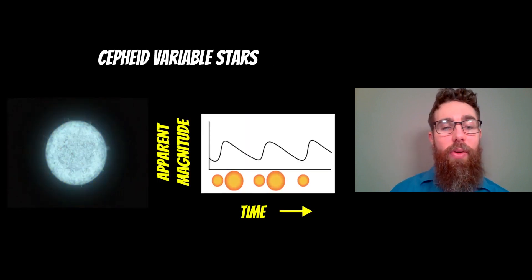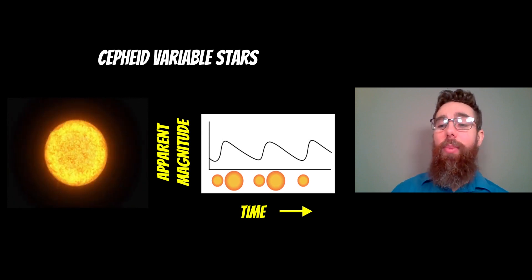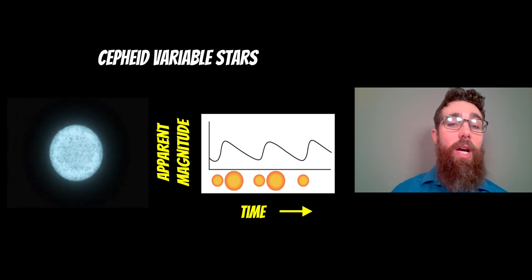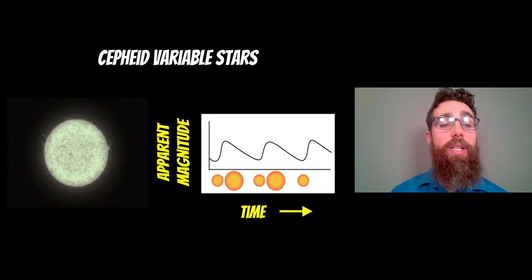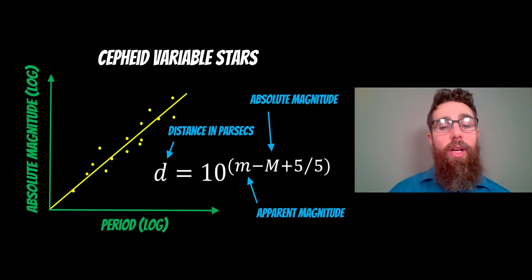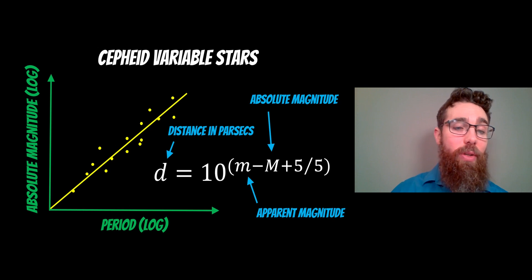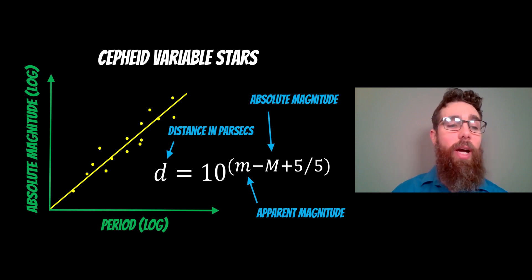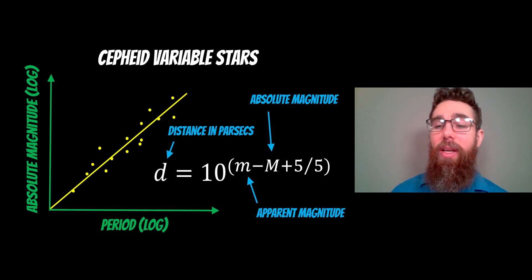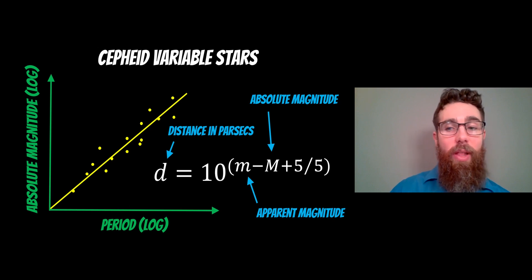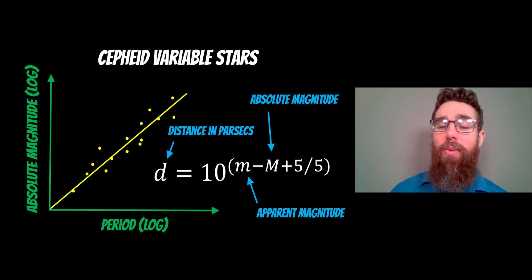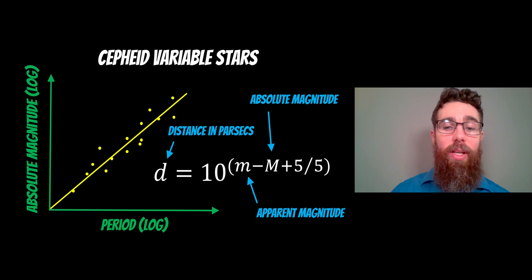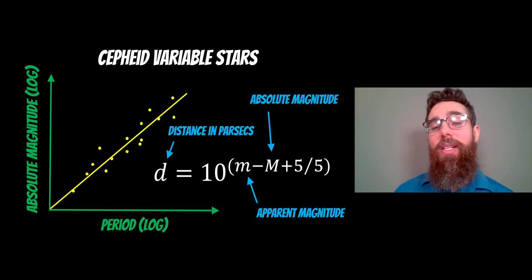Another way is to use variable stars. There is a particular relationship with stars that change their brightness — we measure their apparent magnitude, and these variable stars increase and decrease in brightness with a period. They're very useful because there is a relationship between their period and their absolute magnitude. If we plot the log period against the log absolute magnitude, we get a clear relationship. We measure the period by watching the brightness, look up the relationship to find the absolute magnitude, and since we also have the apparent magnitude as measured from Earth, we can work out the distance in parsecs. The galaxy has to be relatively nearby for this to work, since picking out an individual star in a distant galaxy is difficult.